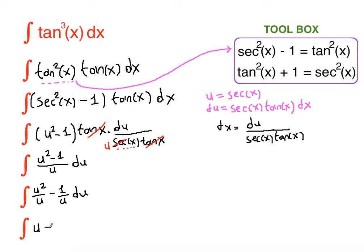Now we can finalize the integration because we know the anti-derivative of each piece. What is the anti-derivative of u? It is one half u squared. Minus what is the anti-derivative of one over u? It is ln absolute value of u plus c.